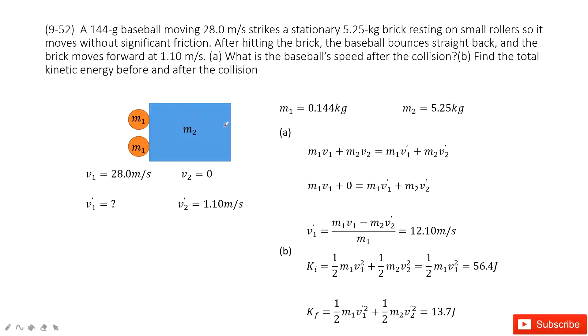We can see we have a baseball, the mass is given, we call it m1, and it just hit a brick. This one, the mass is given m2, right? And the initial velocity for the baseball is given and the initial velocity for the brick is zero, stationary. And after this collision we can see the velocity for the brick is given, 1.1 meters per second.